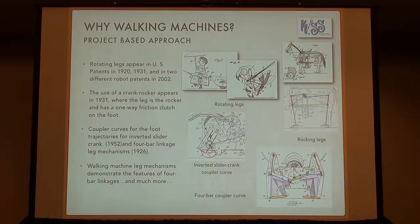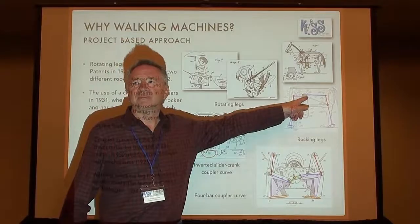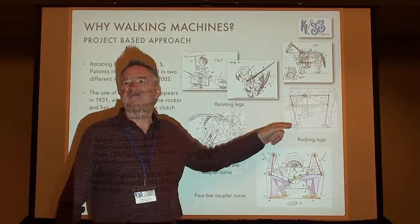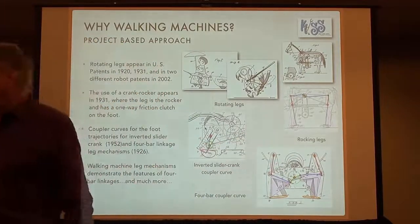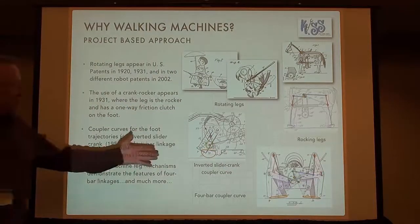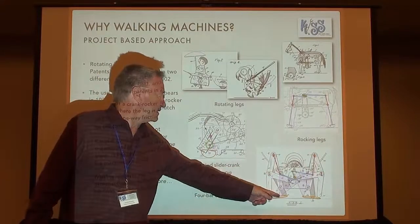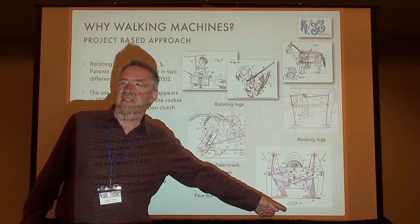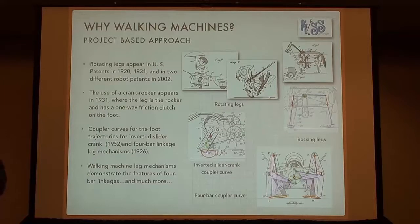This animation of an inverted slider crank is generated with GeoGebra — just simple stuff. Here's another walking machine, just a crank rocker where the rocker goes back and forth and scoots along the ground because it has a one-way clutch in the foot. And here's a nice little walking machine where for the first time you see coupler curves. A lot of what Denavit and Hartenberg spent time on was explaining how to do curvature theory so that you can generate coupler curves of interest.